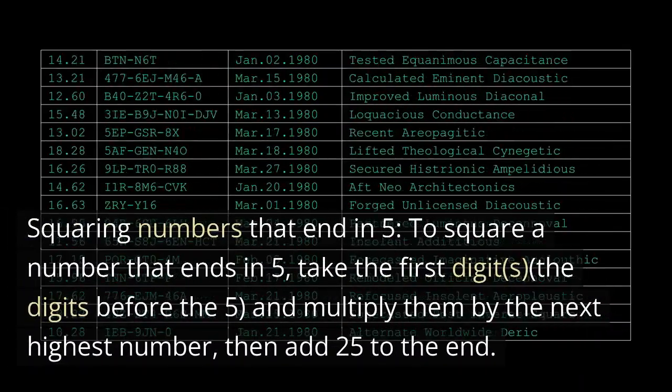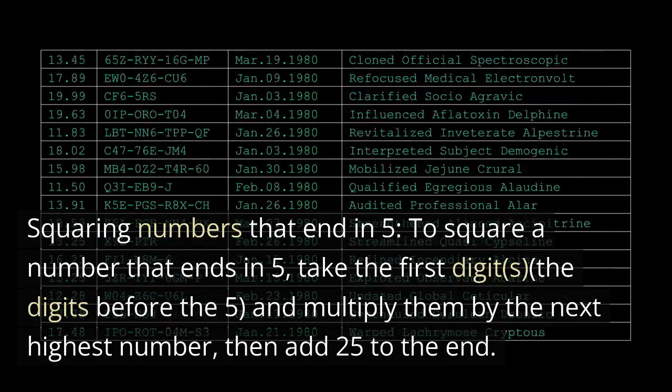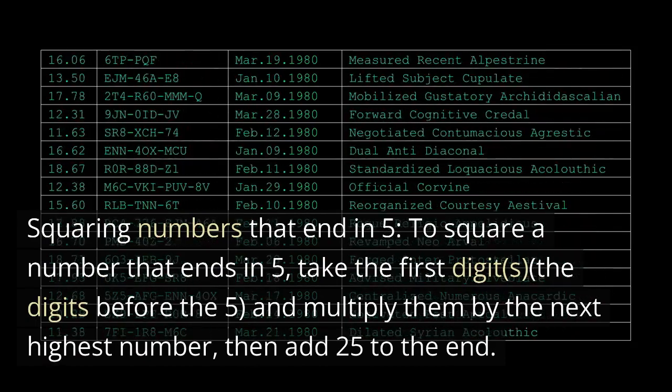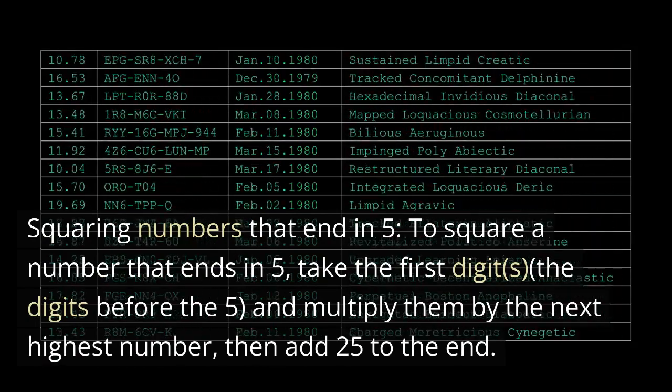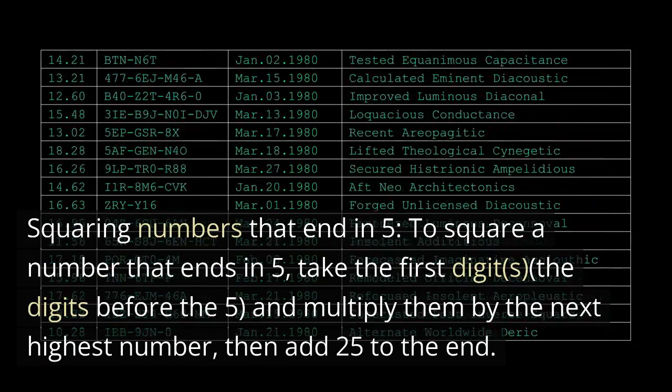Squaring numbers that end in 5: To square a number that ends in 5, take the first digits, the digits before the 5, and multiply them by the next highest number, then add 25 to the end.